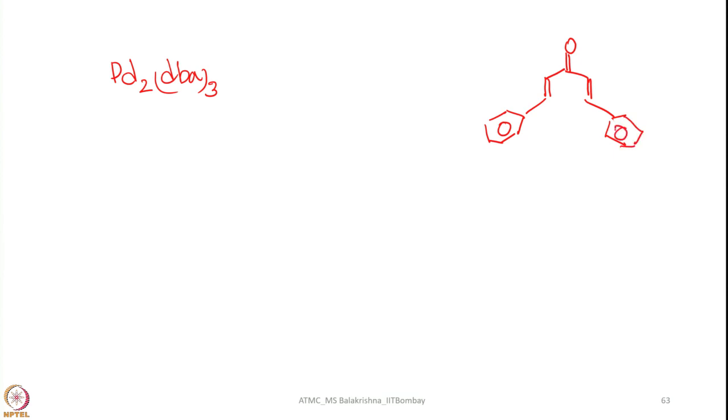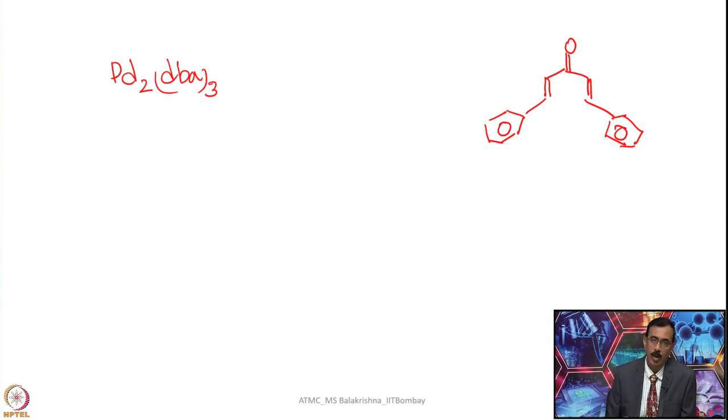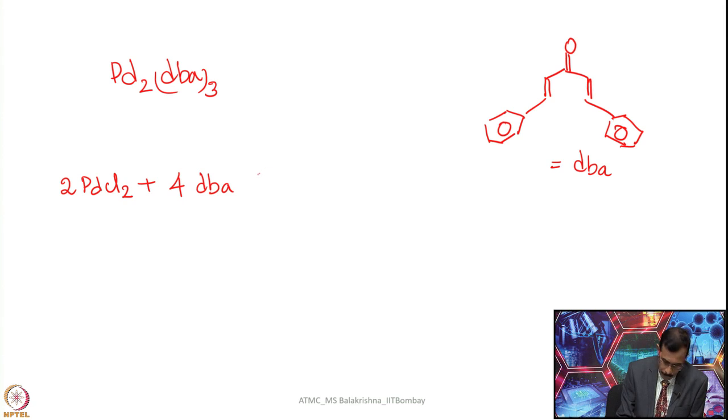This can be prepared very easily starting from benzaldehyde and acetone, one can prepare this compound in large quantities in almost quantitative yield, few hours reaction this is a simple condensation reaction. Once you have this one bright yellow color stuff, one can treat this one with palladium chloride using a reducing agent such as sodium acetate. This should be heated to strictly 55 degrees centigrade, one should not go beyond that one.